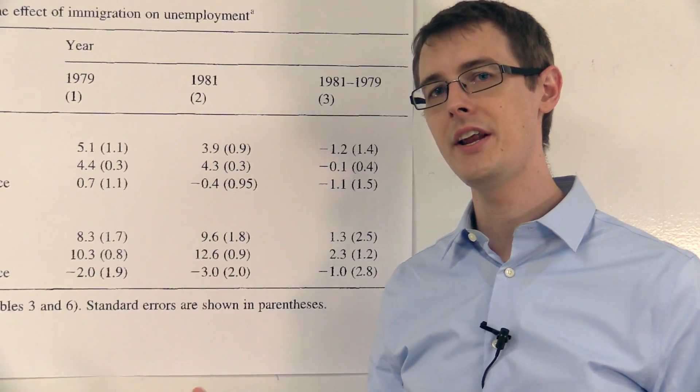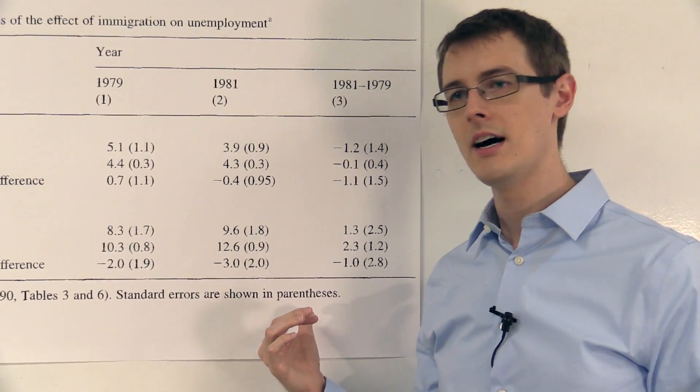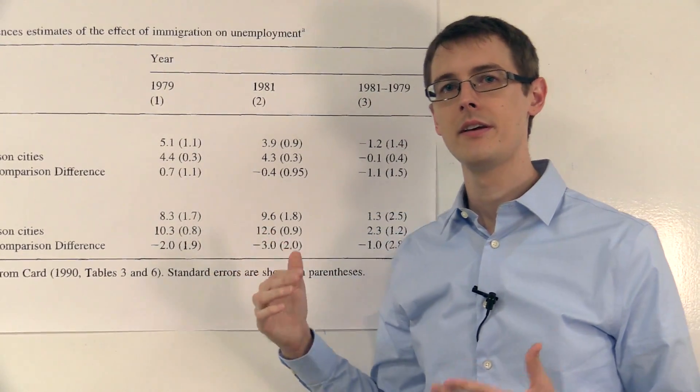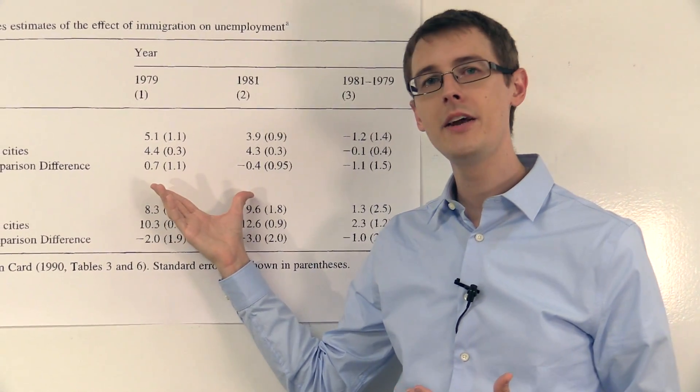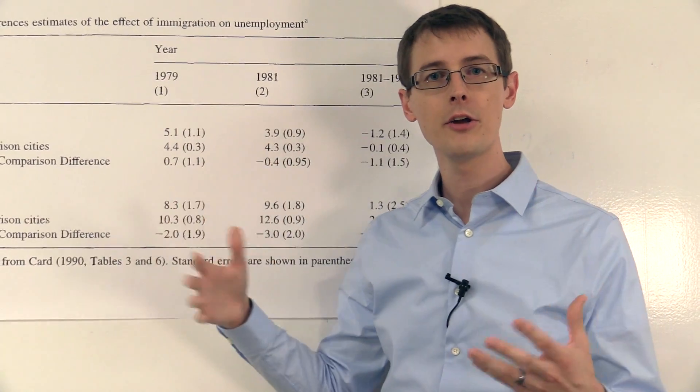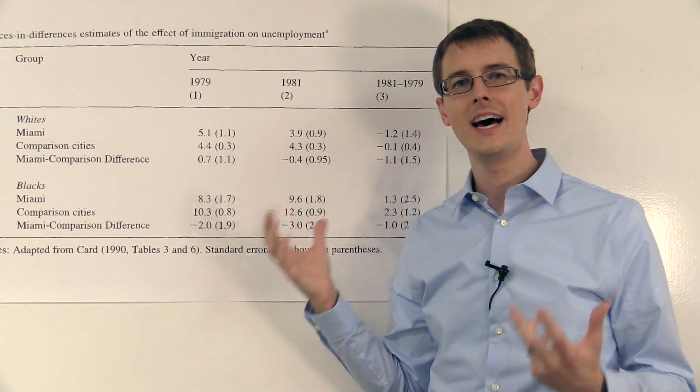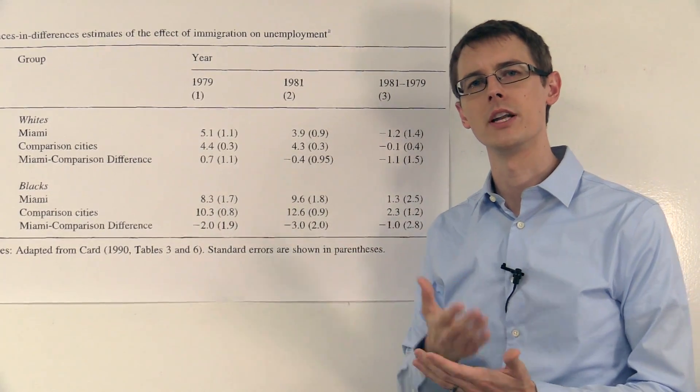So unfortunately, that means we really can't conclude anything about the causal effect of immigration on unemployment here. So although we might believe the causality arguments, we believe the common trends assumption, our statistical data just isn't enough to draw a really strong conclusion.